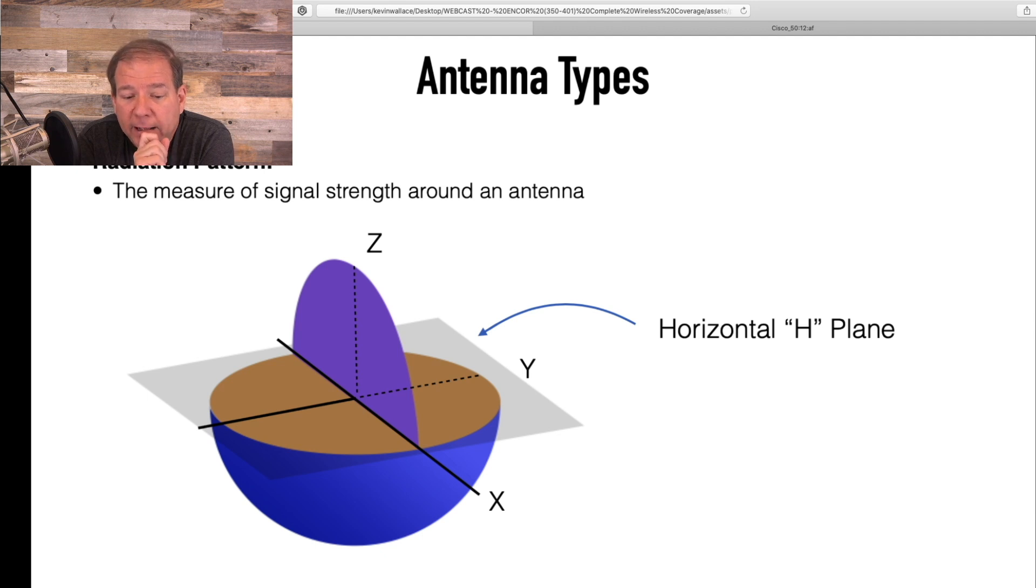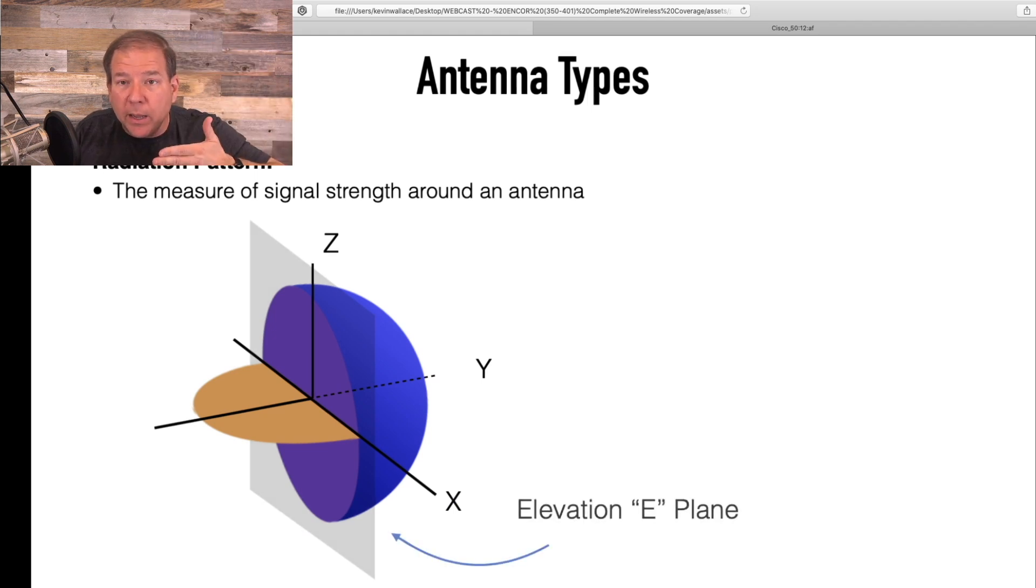A couple of terms for you. If I am plotting out what's happening, if I'm looking down on things, I'm looking down on what's happening horizontally. If we cut that beach ball in half, we would be looking at the H plane, the horizontal plane. So if I'm looking down on my coverage area, I'm looking down on my H plane. What if we cut that beach ball vertically and I'm looking at the up and down coverage area, that's the E plane, that's the elevation plane.